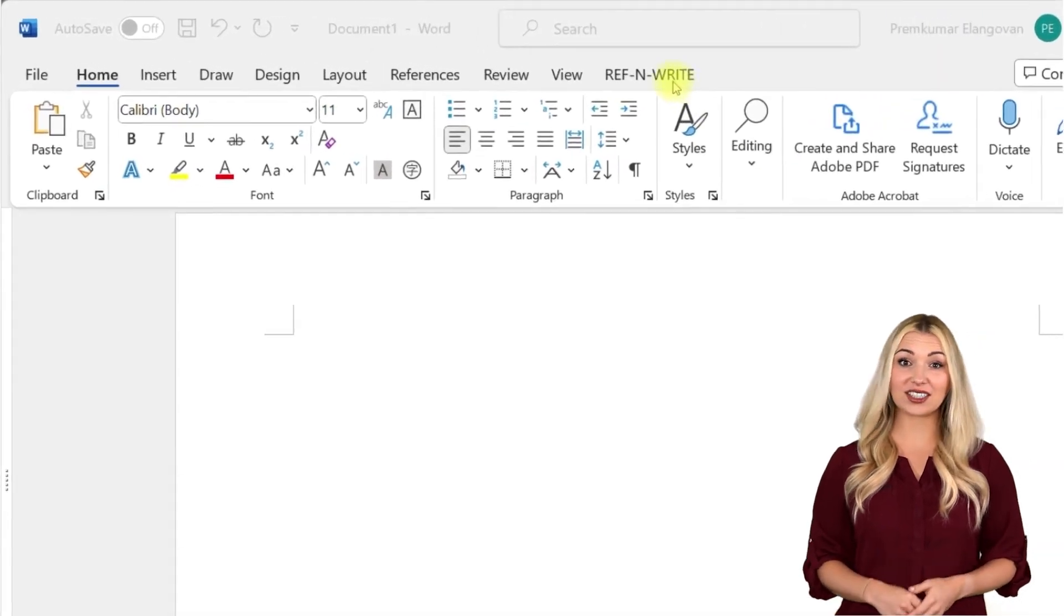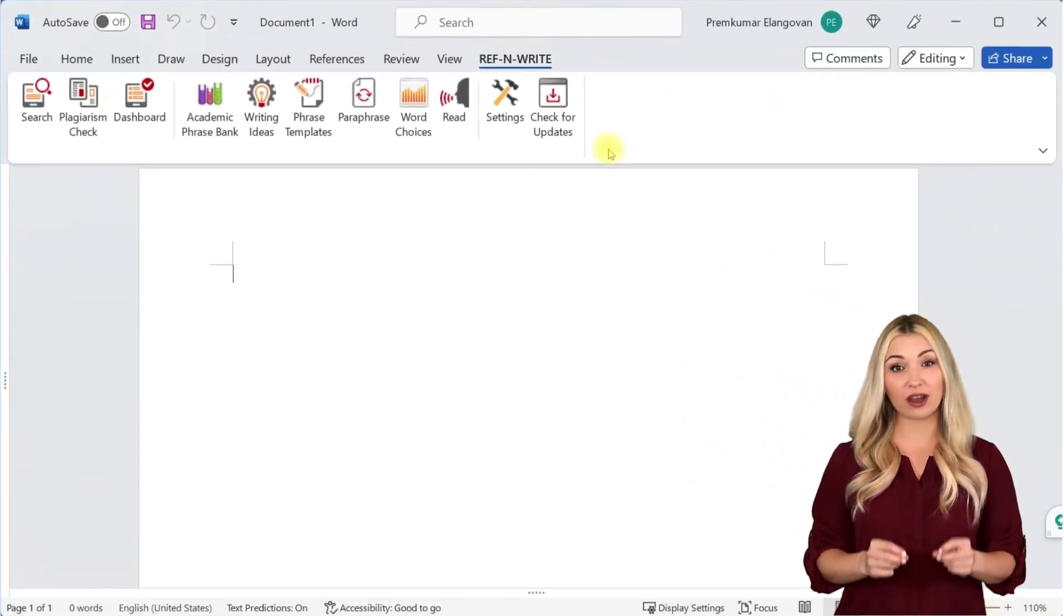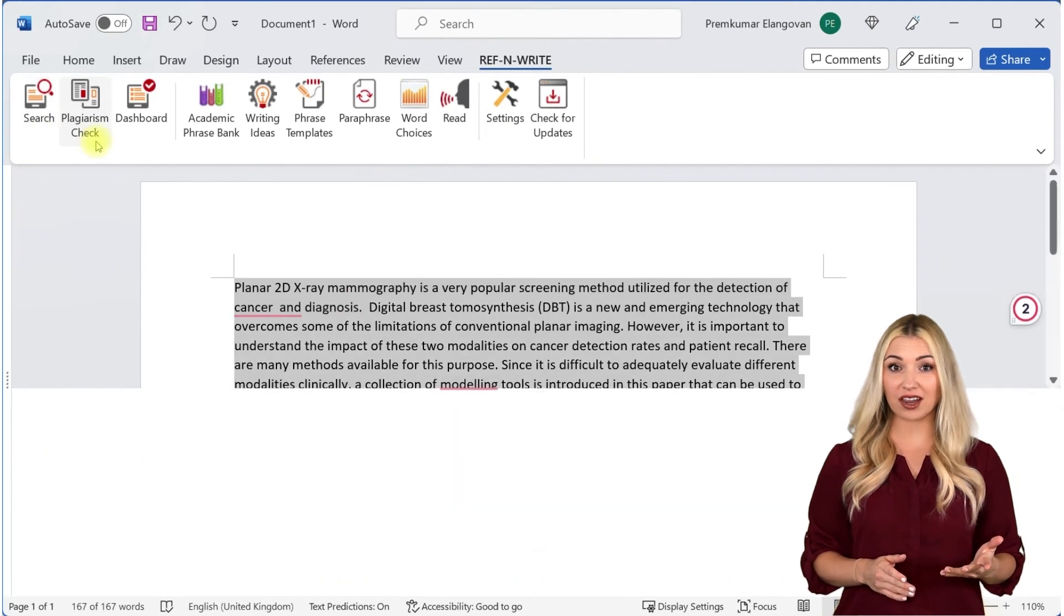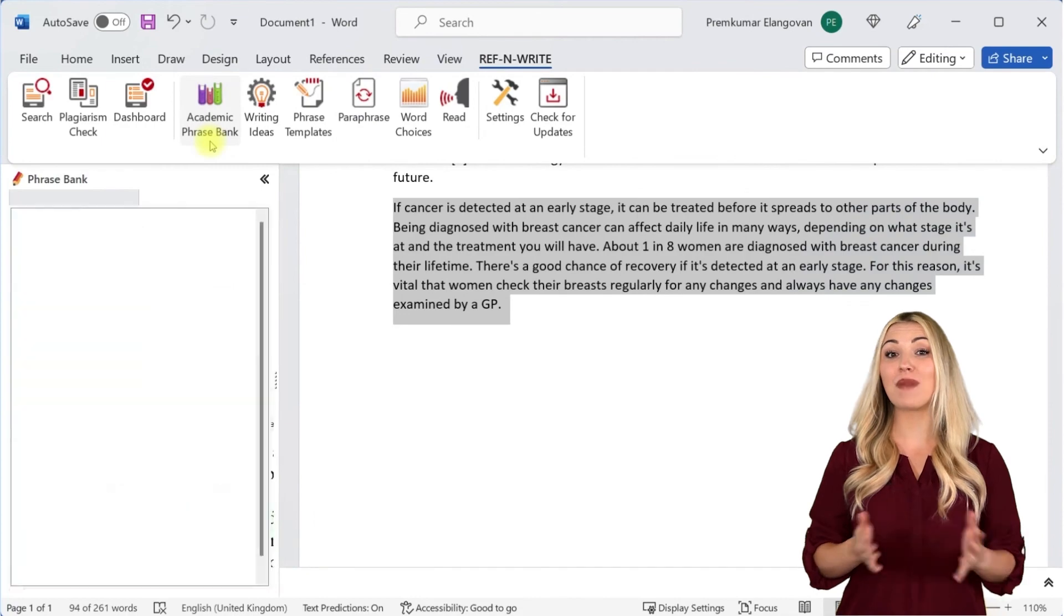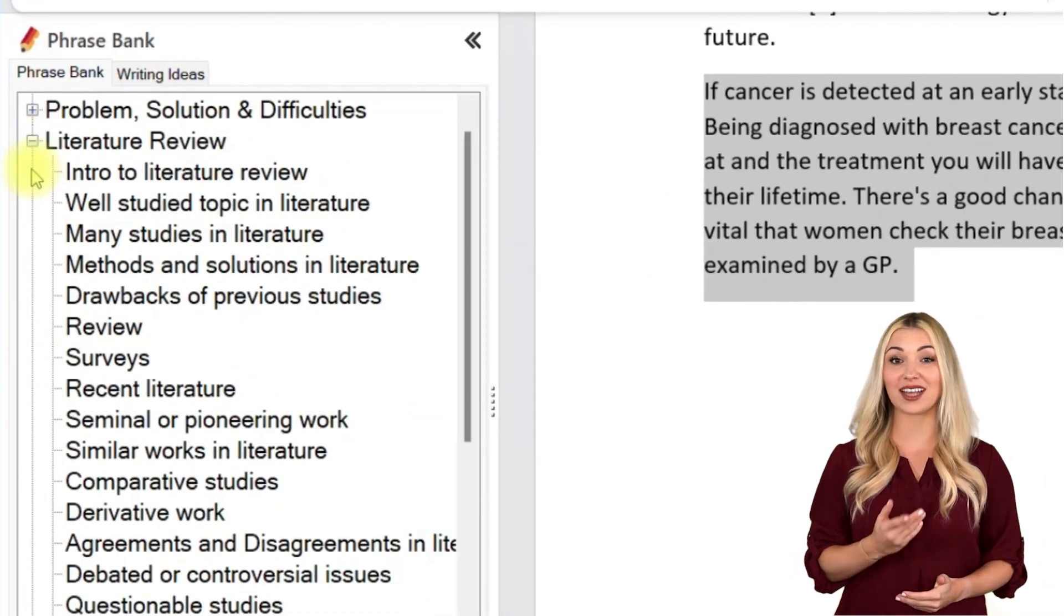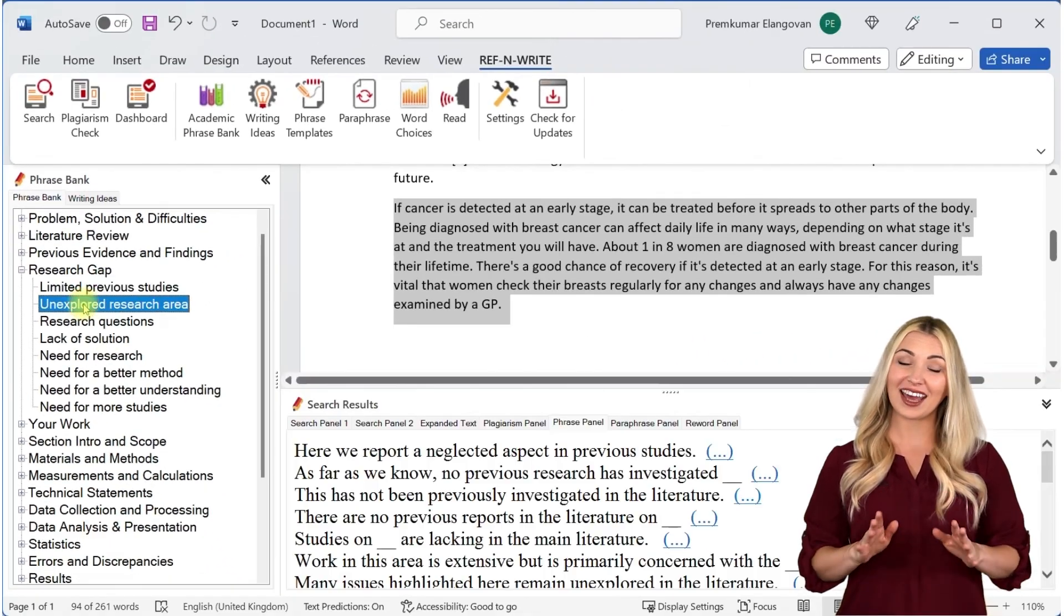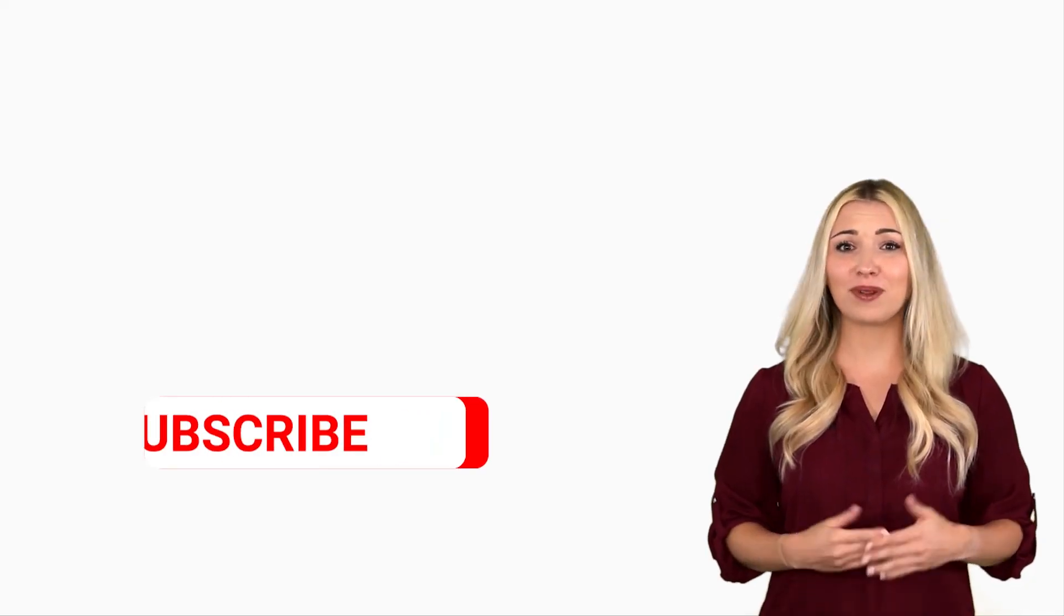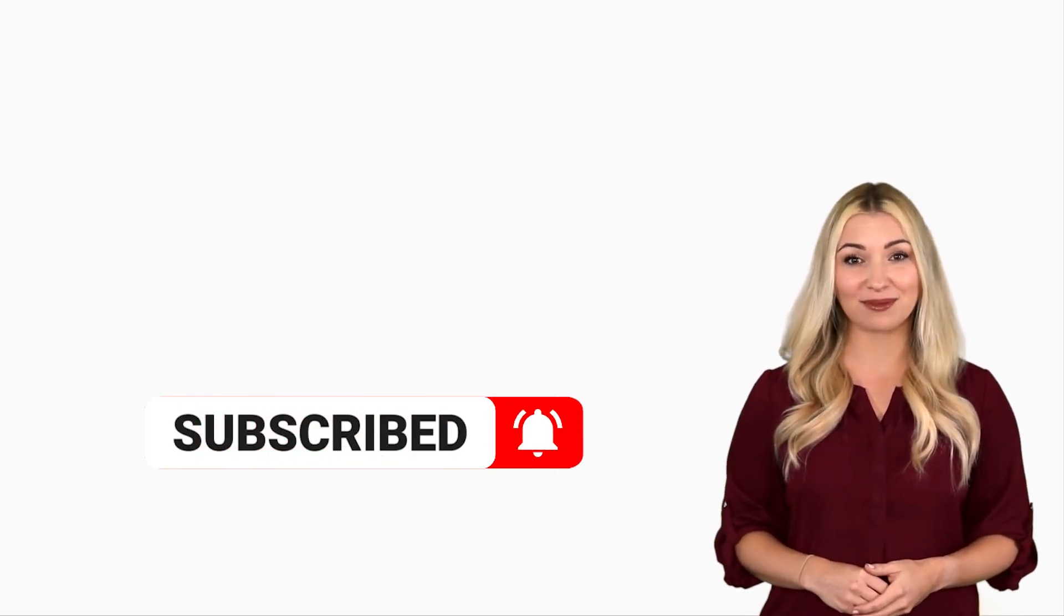If you still haven't installed RefnWrite software, please do it. It comes with referencing tools, plagiarism checkers, paraphrasing tools, an academic phrase bank, and many other useful features to help you write your research papers and thesis. You can sign up for free using the link below in the description. Finally, please subscribe to our channel to get future updates. Bye for now.